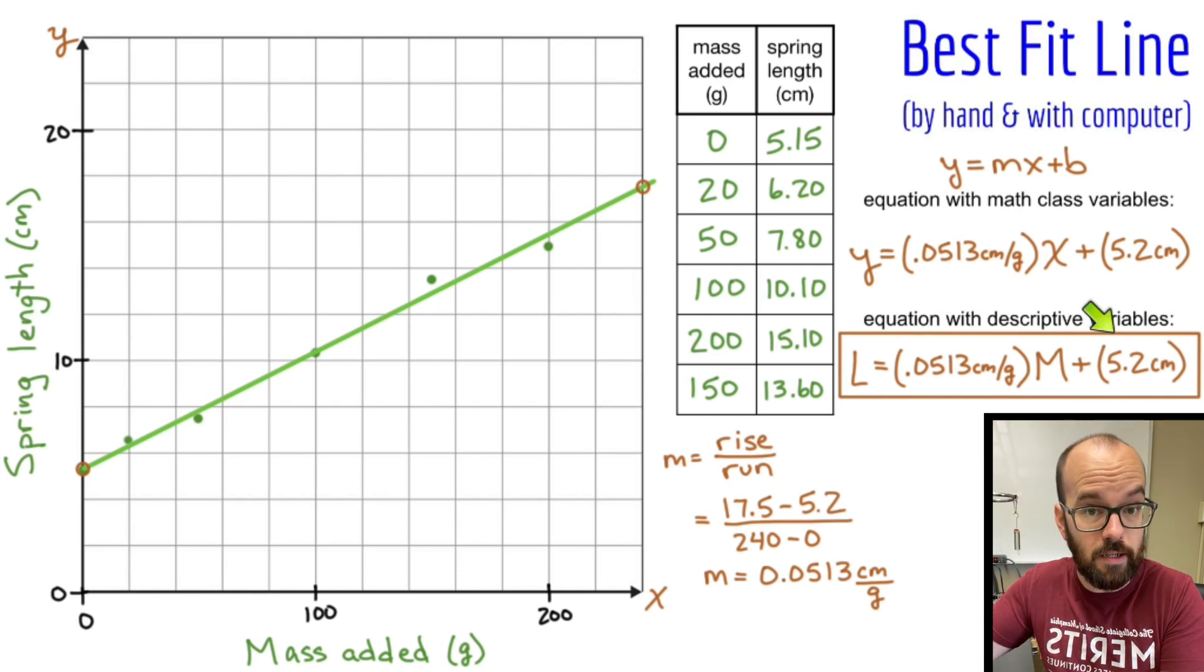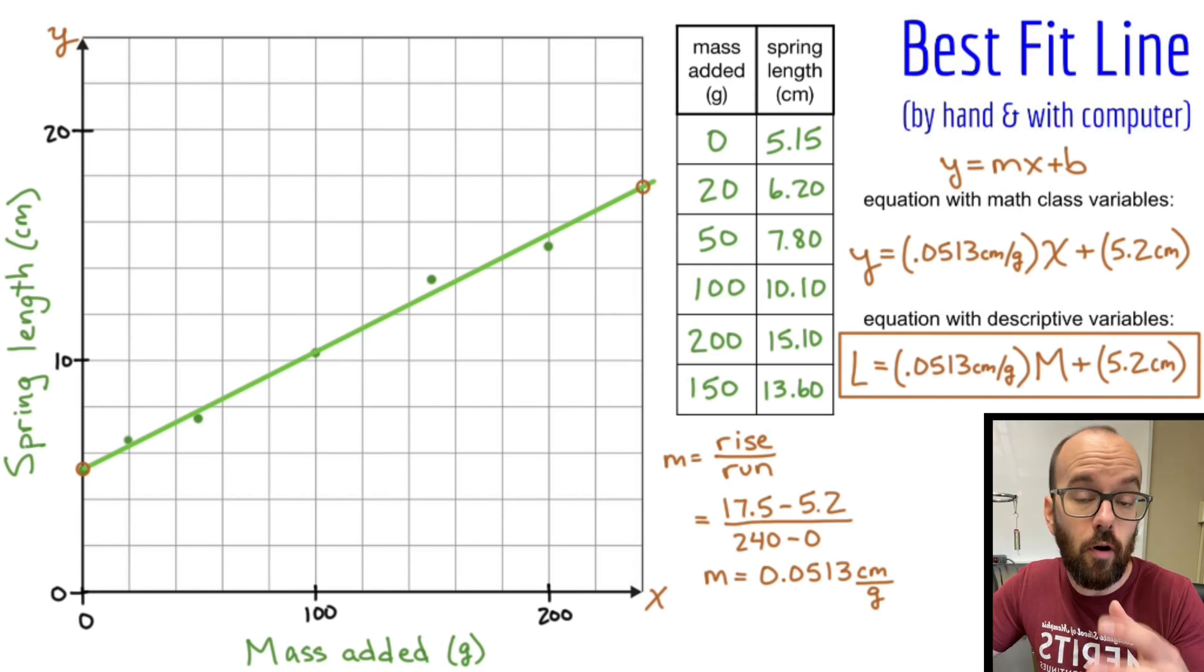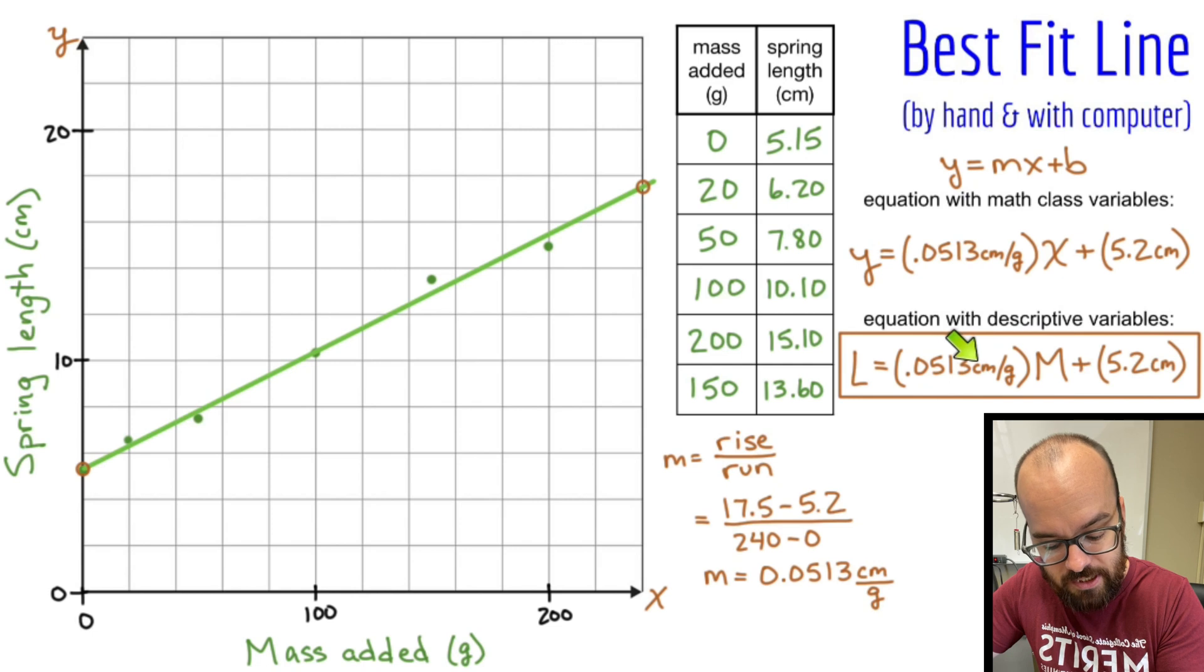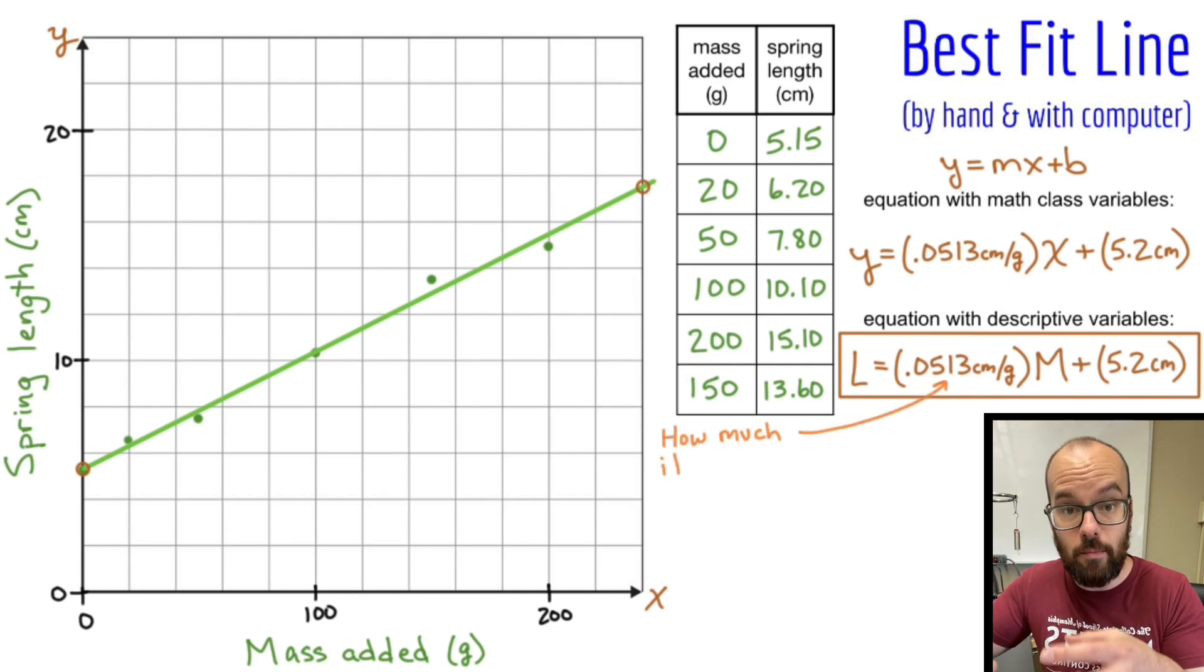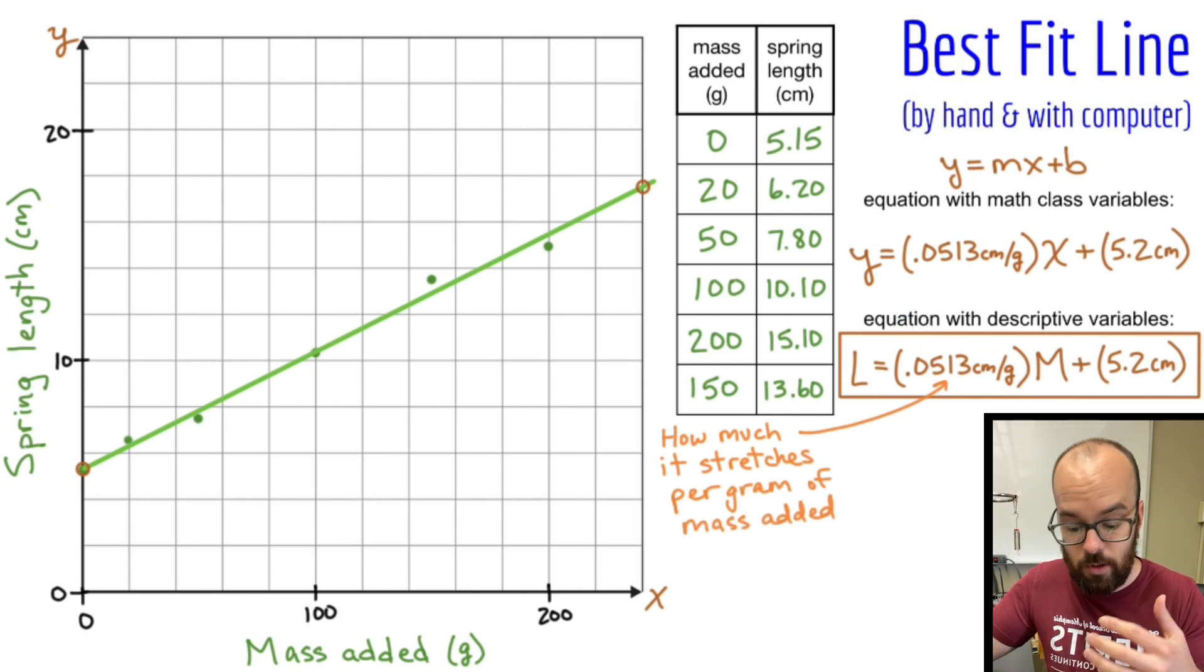Now those two values that we substituted in for our slope and our y-intercept, those have physical meanings. Whenever you write an equation in physics, it's helpful to think, what does this physically mean? For our slope, look at our units. It's centimeters per gram. Essentially what that means is for every gram of mass we add, how many centimeters is the length of the spring changing? So if I add one gram to my spring, what's going to change by a length of 0.0513 centimeters. How much it stretches per gram of mass added.